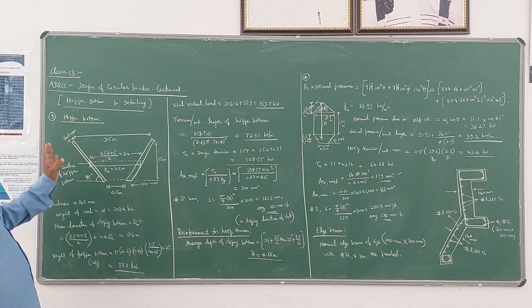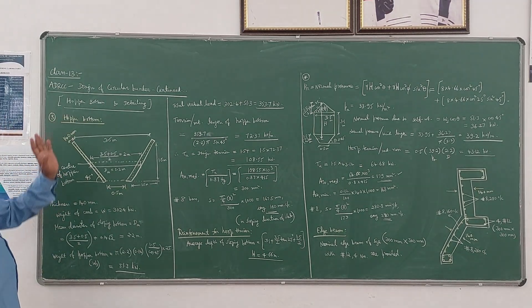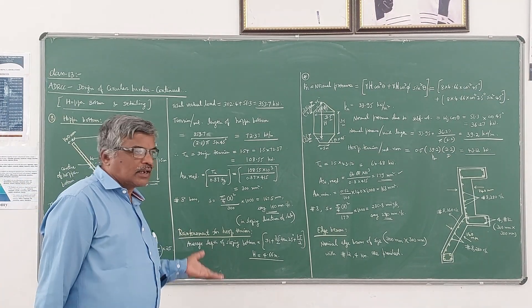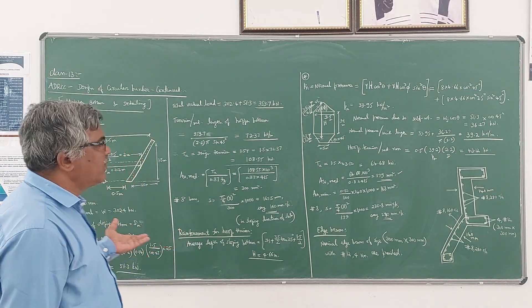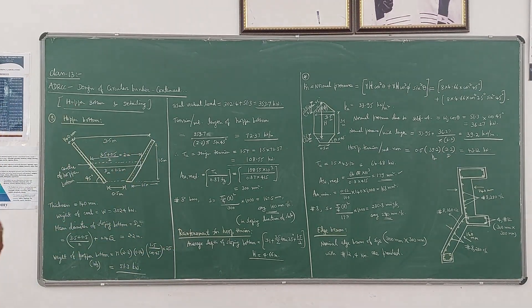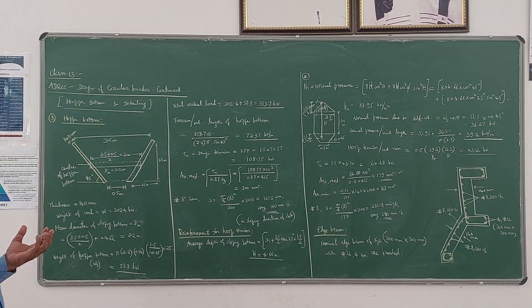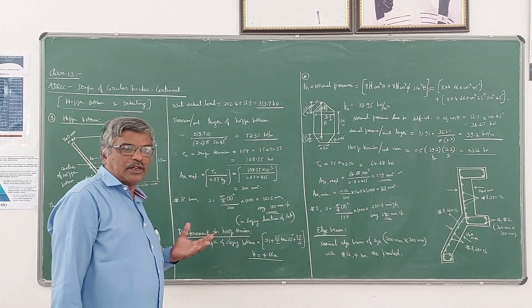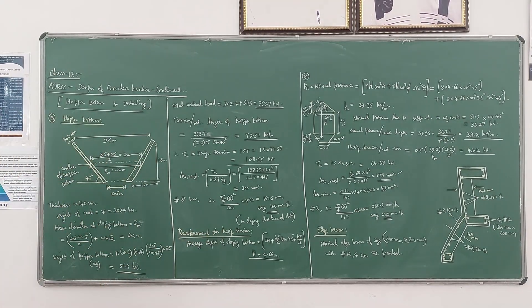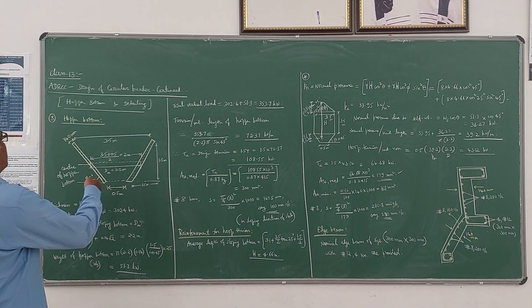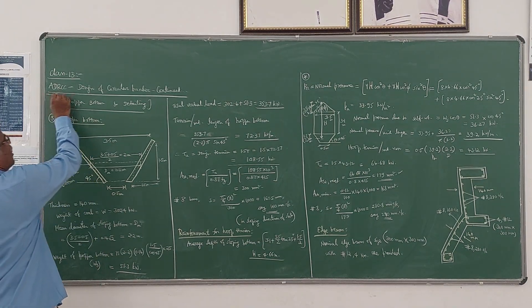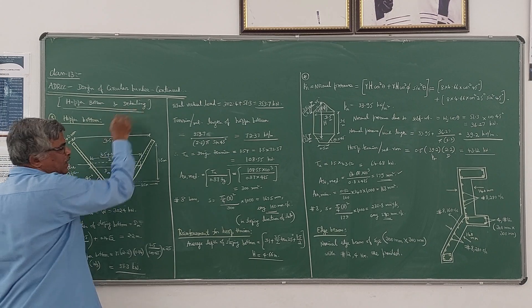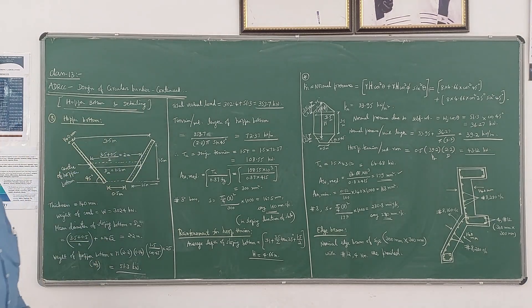We will continue with the design of a circular bunker. In the earlier lecture we have seen how to get the dimensions and how to design the walls of the bunker. Now in this second part, we will design the hopper bottom and also discuss the reinforcement detailing.